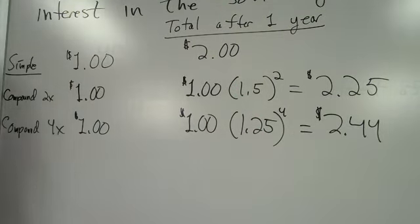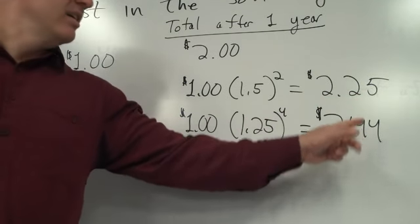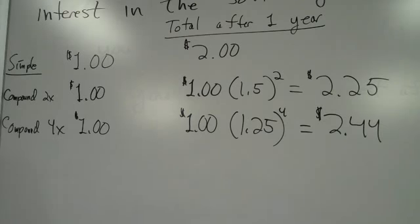These are big jumps. If this were applied to large amounts of money, this would be fantastic. Look at that. I got 25 extra cents here. And now I got, what is that, 19 extra cents? So I got less of a jump, but still a big jump.